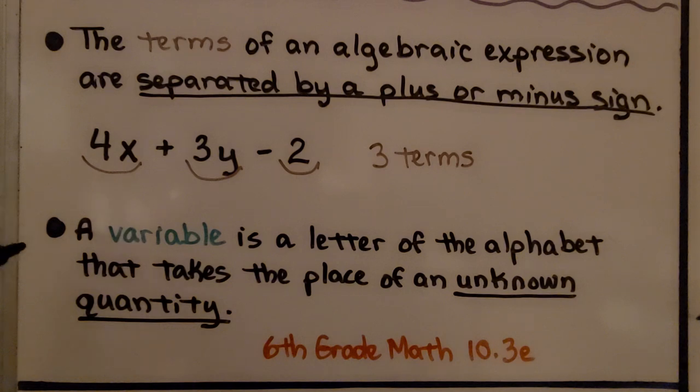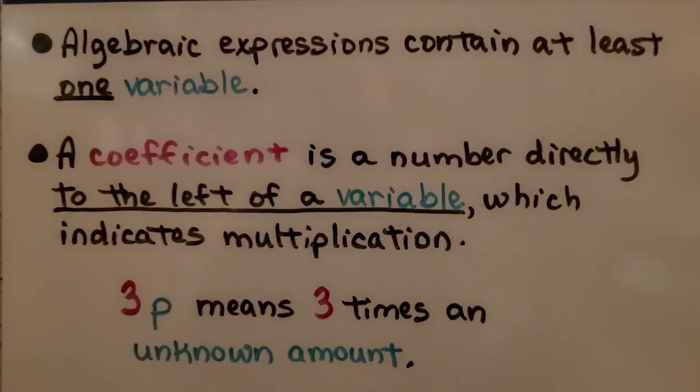A variable is a letter of the alphabet that takes the place of an unknown quantity, an unknown amount. Algebraic expressions contain at least one variable. A coefficient is a number directly to the left of a variable, which indicates multiplication. If we have three, that's the coefficient, and p, that's our variable, our letter of the alphabet, taking the place of an unknown amount, it means we have three times an unknown amount.